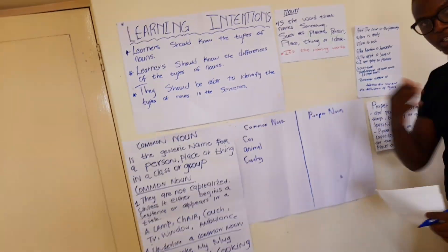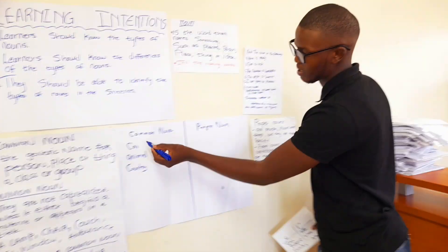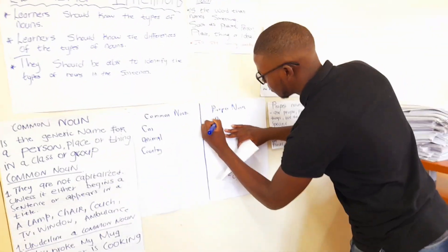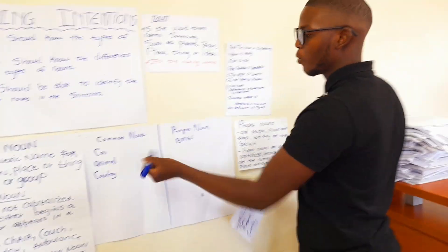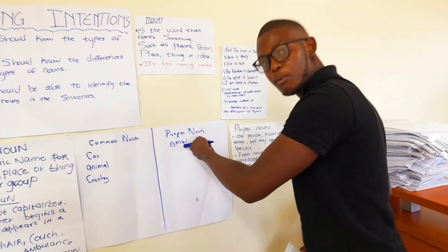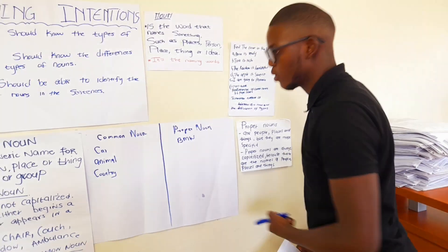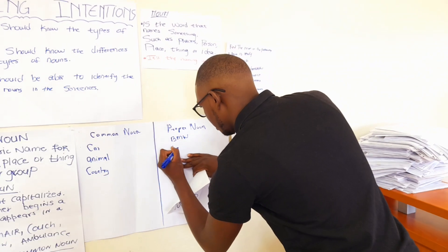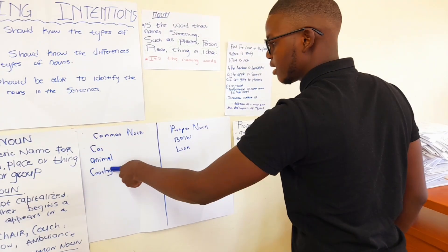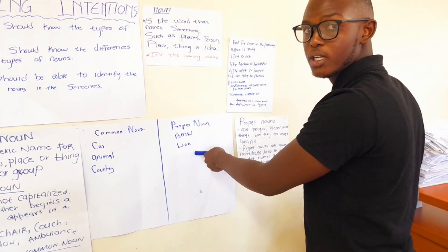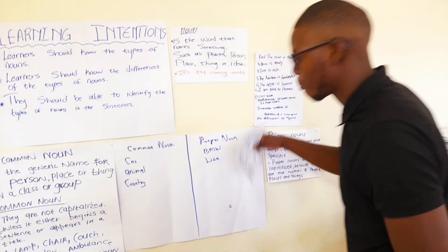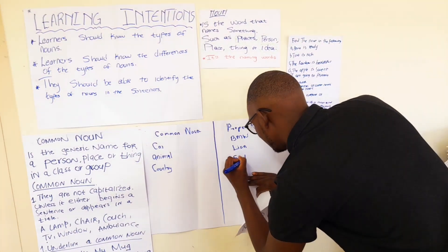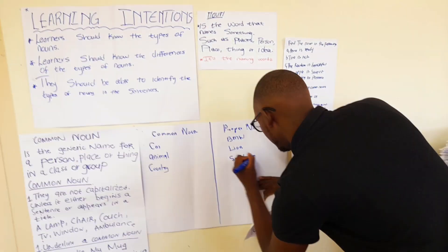Now we move to proper nouns. Since common nouns are non-specific, proper nouns are specific. Let's specify 'car' — which car? BMW. We specified that the car is a BMW, which makes it a proper noun. Which animal? Lion — the word animal is now specified as a lion, which makes it a proper noun. Which country? South Africa. We are specifying. I hope you all understand.